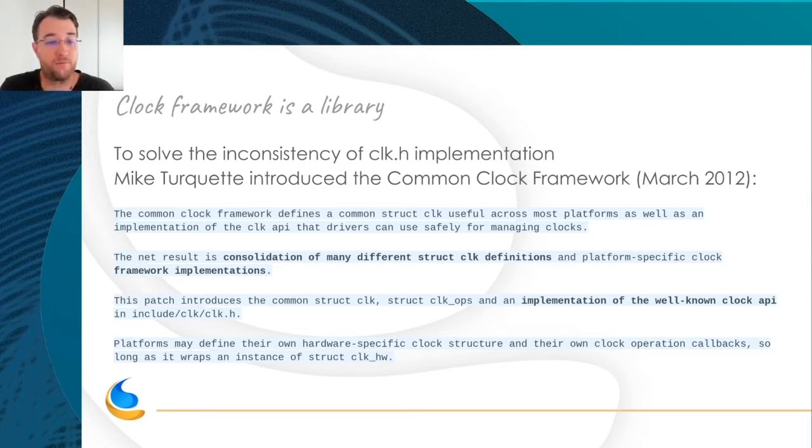To solve this inconsistency, Mike Turquette, who worked for TI at the time, introduced the common clock framework. It was like five years later. For five years they handled this stuff, but at one point it was not manageable. The result was the consolidation of many different struct clock definitions and different framework implementations. The goal is an implementation of the well-known clock. They kept the clock.h API, which was okay-ish. But they took all the different permutations and made a common one with all the good practices and the good algorithms.